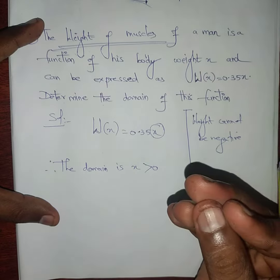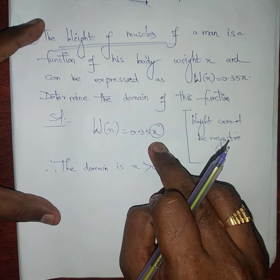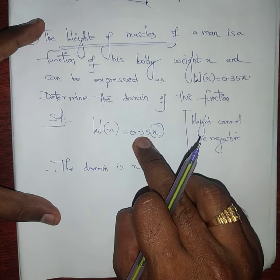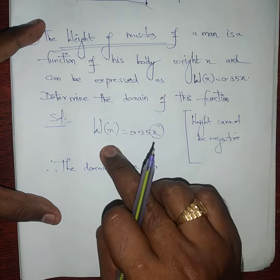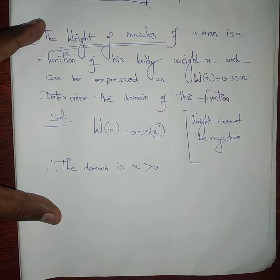After 0 I can put 0.1, I can put 0.2, I can put 0.3, I can put 0.4. But I can't put value of 0 because 0.35 times 0 is 0, and weight cannot be 0. So I can put a value which is greater than 0.